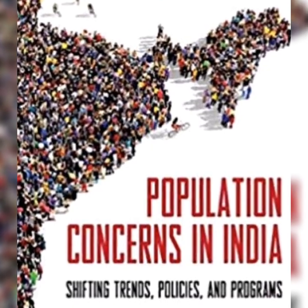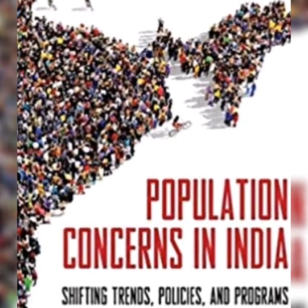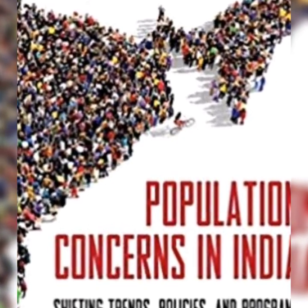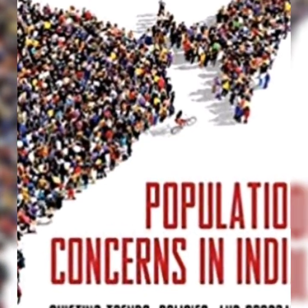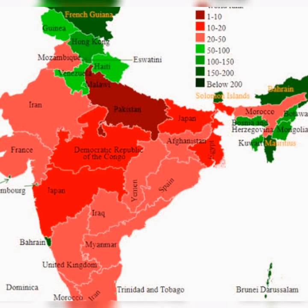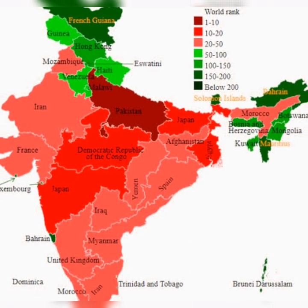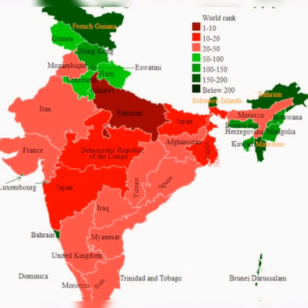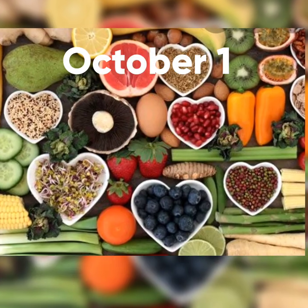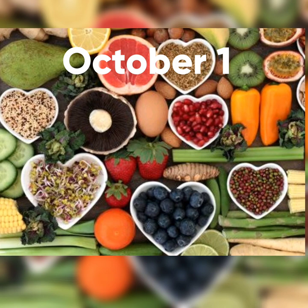World Population Day is on July 11th. It is to raise awareness of global population issues. India's population is 17.7% of the world.